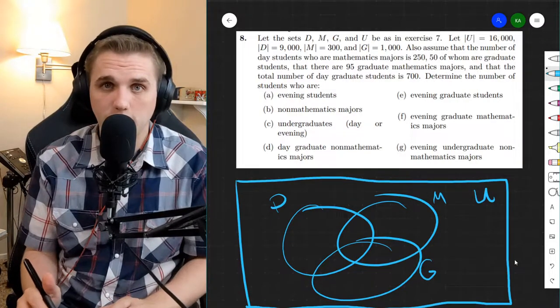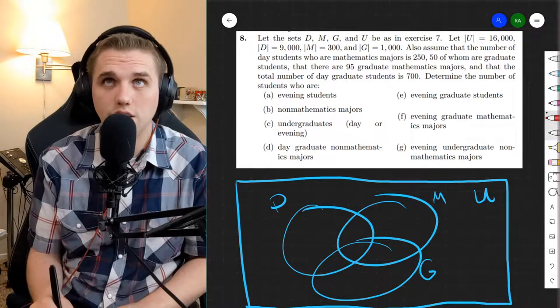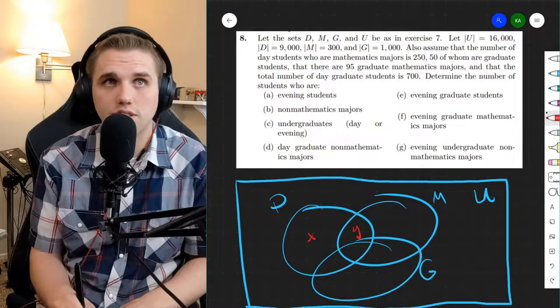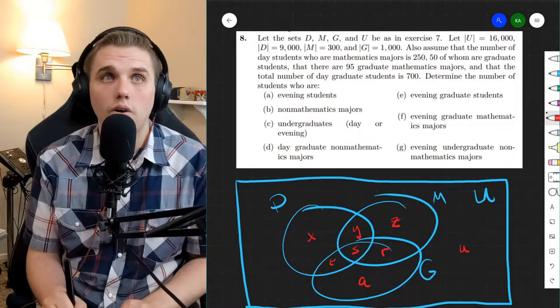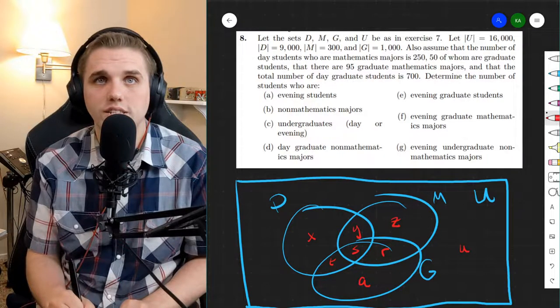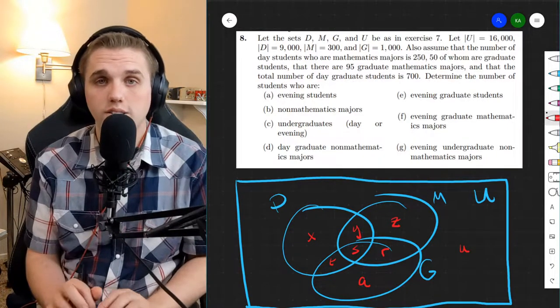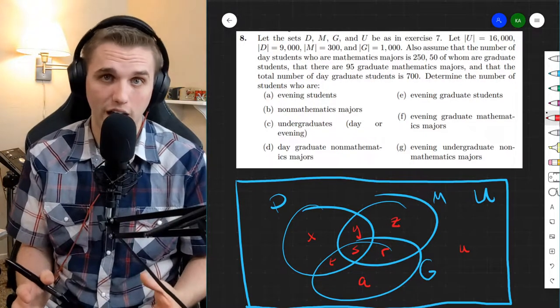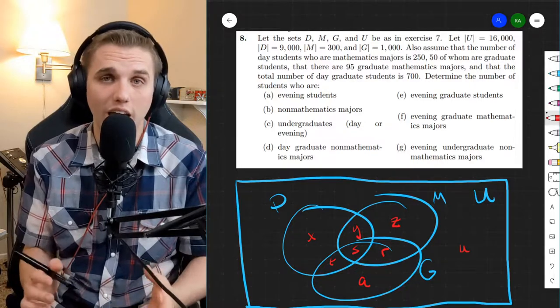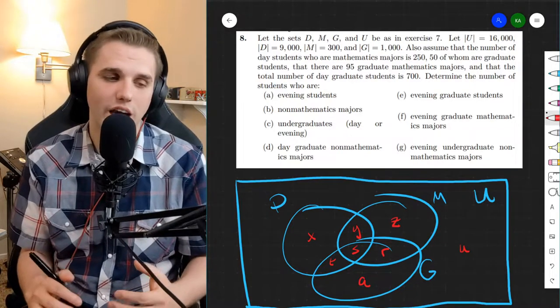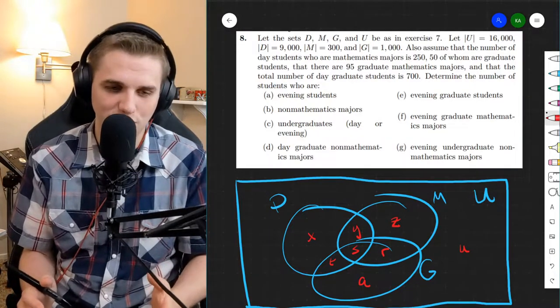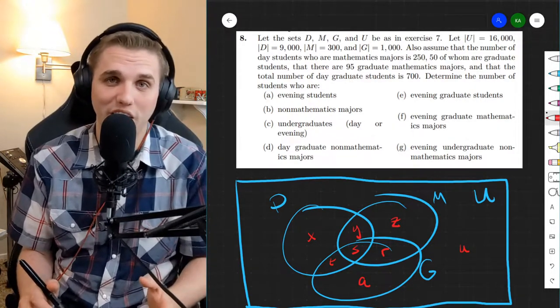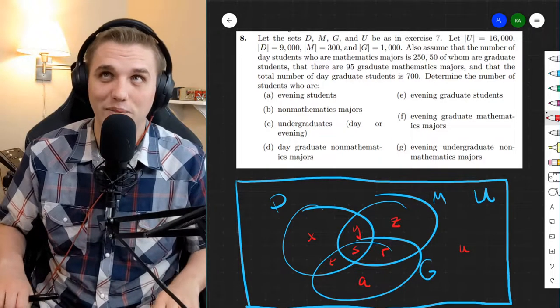Whenever we're doing something like this, what I really like to do is to put in letters in every single section. So that means I have one, two, three, four, five, six, seven, eight different separated regions. So I essentially disjointified my universe into eight different sections. That is not a word in the English dictionary, but it is a word in the math community. I kid you not, that is a word, disjointify.